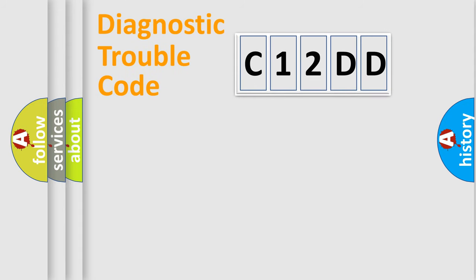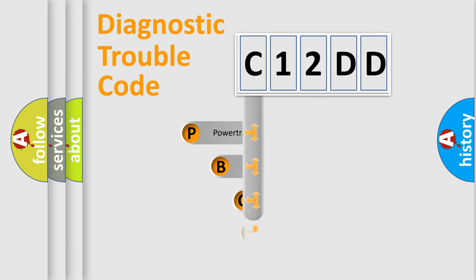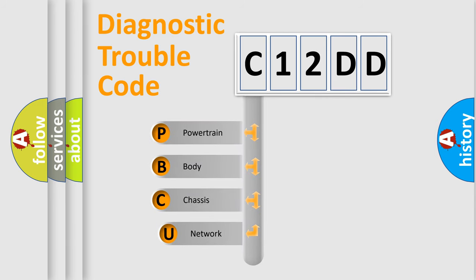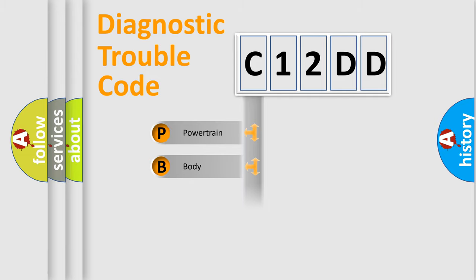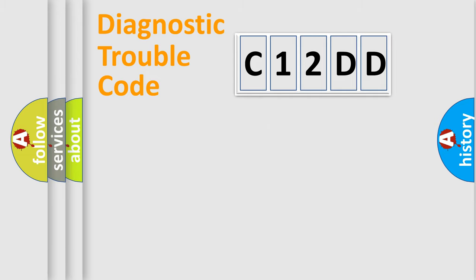Let's do this. First, let's look at the history of diagnostic fault code composition according to the OBD2 protocol, which is unified for all automakers since 2000. We divide the electric system of automobile into four basic units: Powertrain, Body, Chassis, and Network. This distribution is defined in the first character of the code.